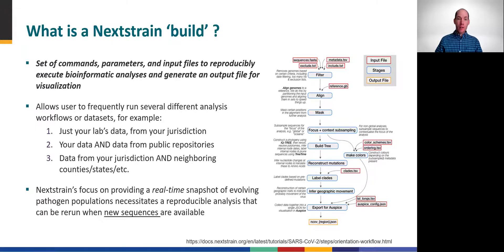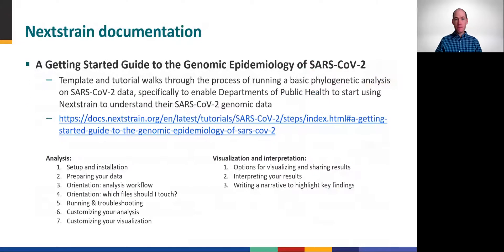The snapshots they provide can be easily rerun as new sequence data become available. Each of these builds includes many steps, as seen here in the diagram on the right, but everything gets neatly encapsulated and standardized for improved reproducibility. The Nextstrain team has developed a nice tutorial with templates that walk you through the steps necessary to conduct phylogenetic analyses of SARS-CoV-2 for genomic epidemiology, separating the Augur analyses on the left and the Auspice visualizations on the right.